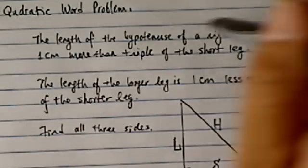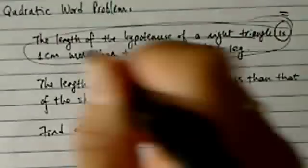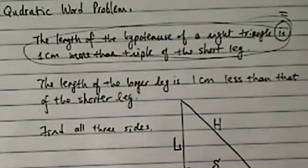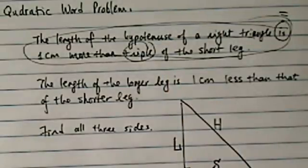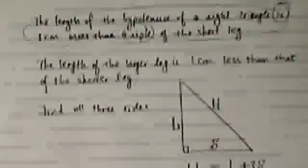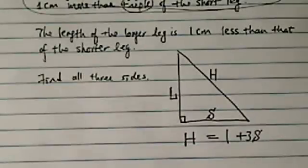So the equation for the first sentence becomes simple. We've got triple, triple of the short leg. So H is equal to 1 plus 3 times the short leg. That's the first equation.